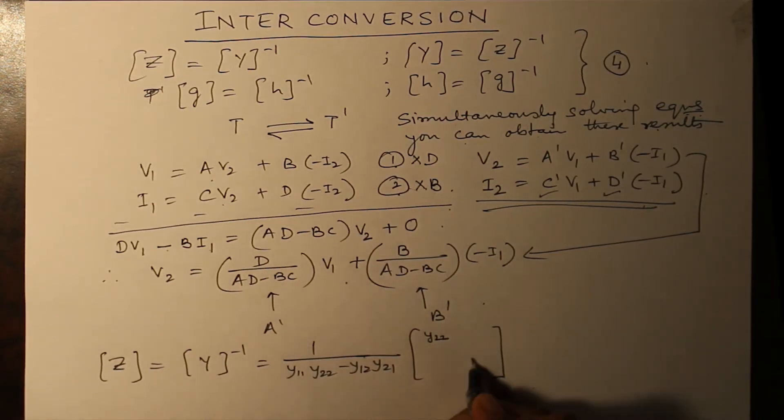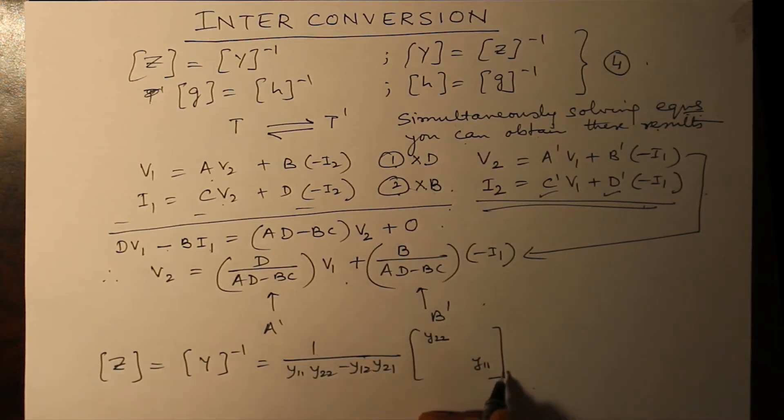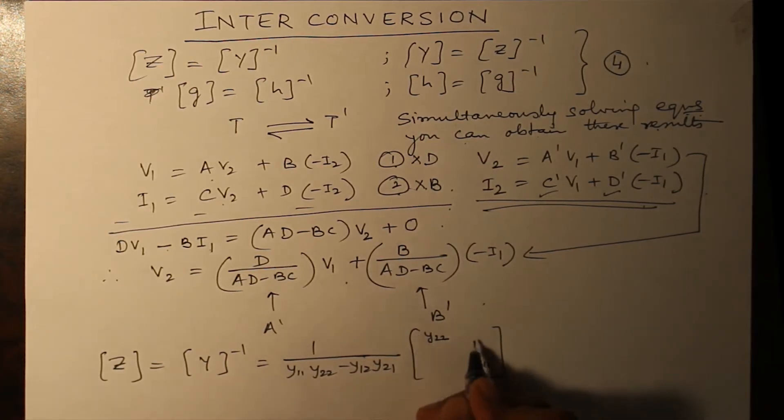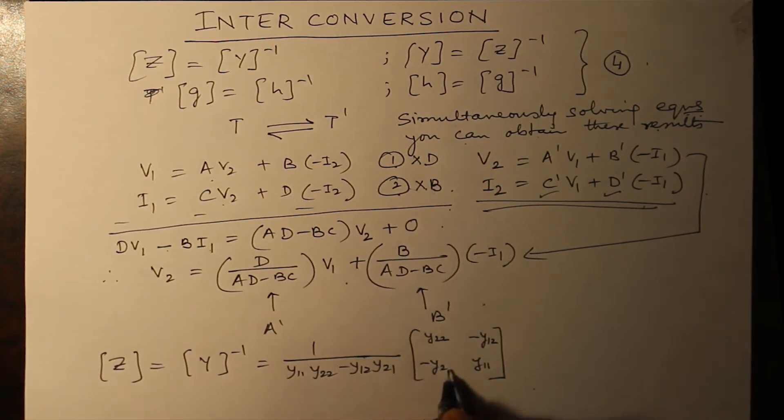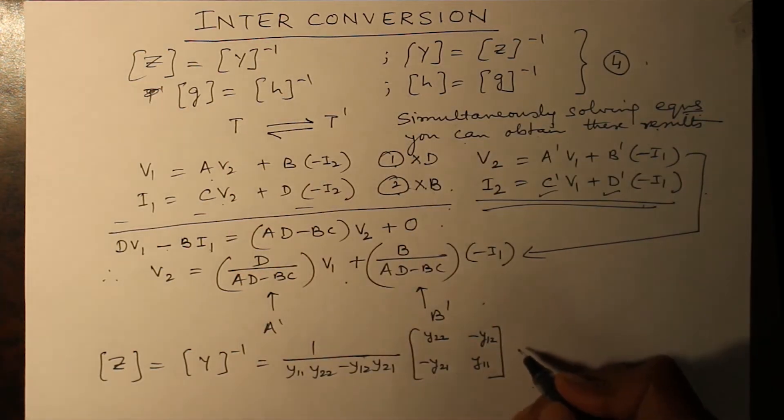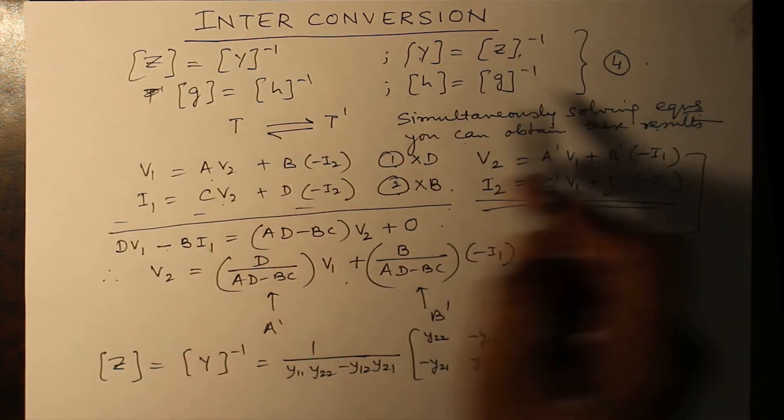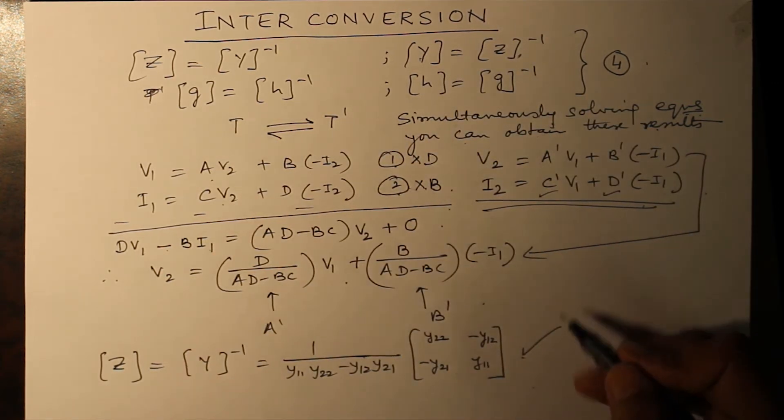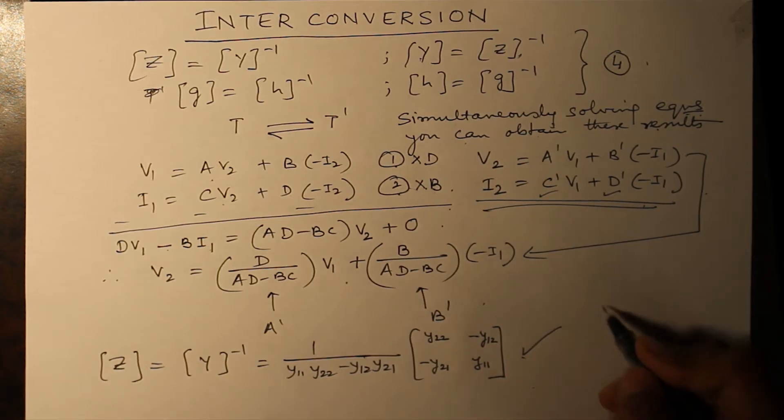And these two values are to be interchanged. Y11 was here, it has been brought here. Y22 was here, it has been brought here. And these two values, just put a negative sign. This is the basic result of inverse of the matrix. All of you are aware of it. So using the same method, you can find out these.